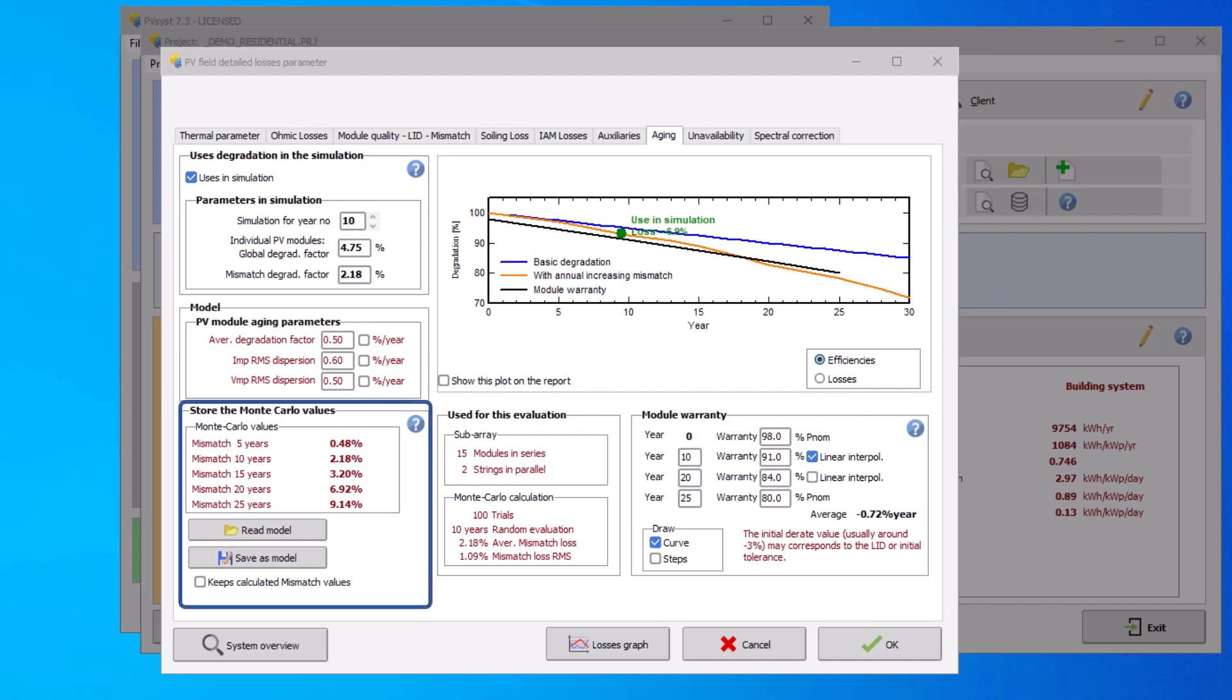The Monte Carlo values computed by PVSYST are displayed in the store the Monte Carlo values section. Since this is a random process, the results may change for each simulation. Activate the keep calculated mismatch values if you prefer to fix the values. When this option is activated, the values are recalculated every time that the parameters change. Even when you exit the dialog detail losses, the values that are displayed will be the same.